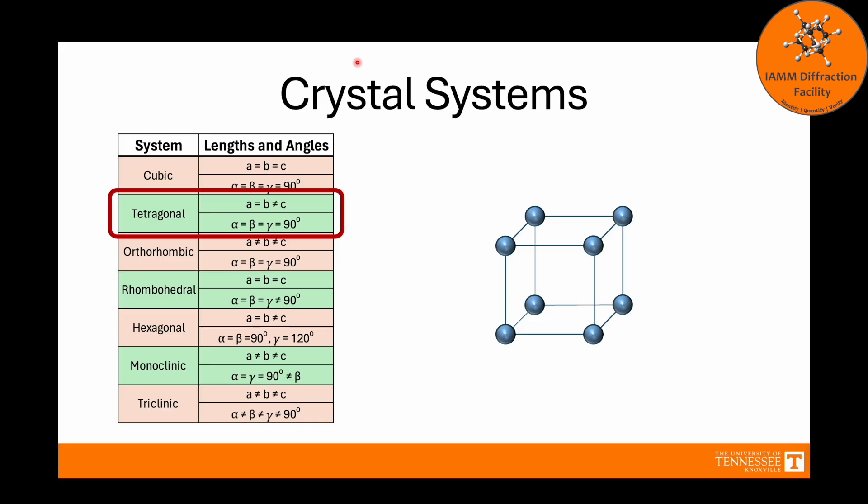If we look at tetragonal, we notice that the only difference is that A equals B does not equal C. Essentially, two of your edges are of the same length, but the third one is either longer or shorter. It doesn't really matter which one is longer or shorter. For this example, I'm just going to make that dimension a little bit longer, and now we have a tetragonal unit cell.